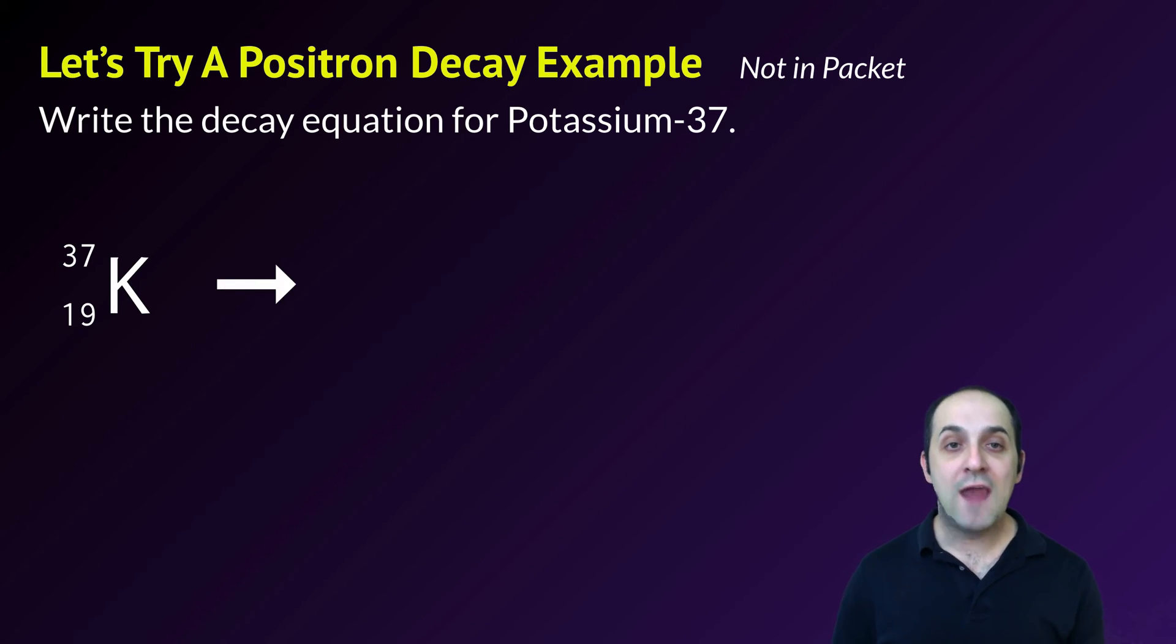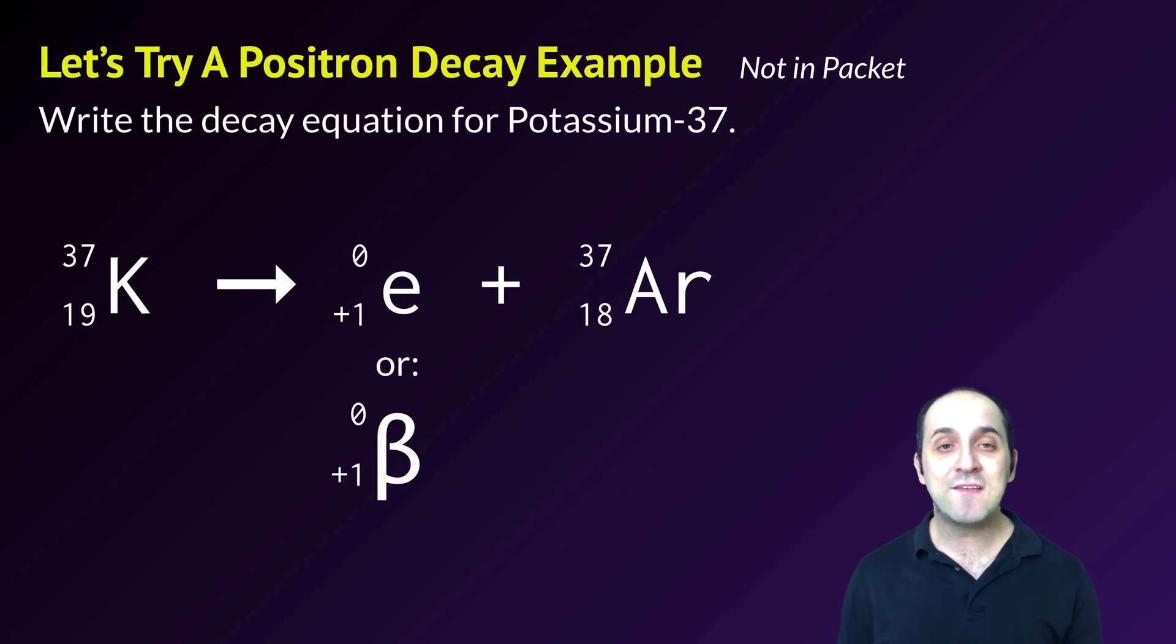I'm going to draw my arrow and write my positron notation. There's two ways of writing a positron. I've chosen one, it doesn't matter, but I have to pick one and shouldn't write both. Once I've picked which one to use, I put my plus sign to show the isotope that's produced. 37 minus 0 is 37, and 19 minus a positive 1 is 18, which is argon.